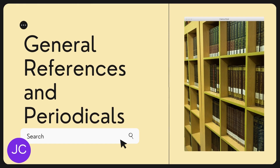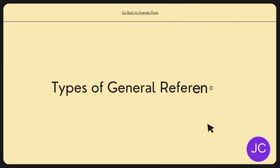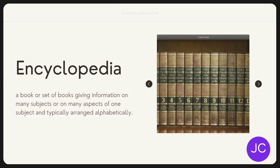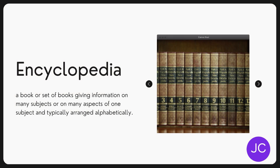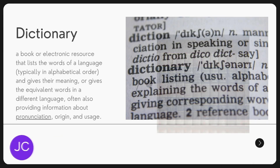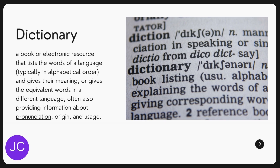Good day! In this video, we are going to discuss the different types of general references and periodicals found inside our library. So let's get started. The different types of general references are as follows. Encyclopedia: a book or set of books giving information on many subjects or on many aspects of one subject, and typically arranged alphabetically.